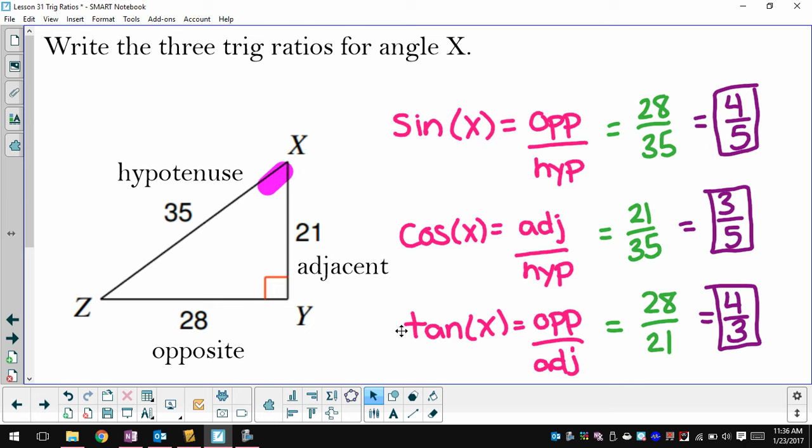Now we're going to talk in the future that if we knew the measure of angle X, if we knew exactly how many degrees it was, we could plug that in here for X, and we can use the functions on the calculator, which we'll talk about in another lesson. And when we put sine of whatever that angle was in the calculator, it would give us 4 fifths as an answer.